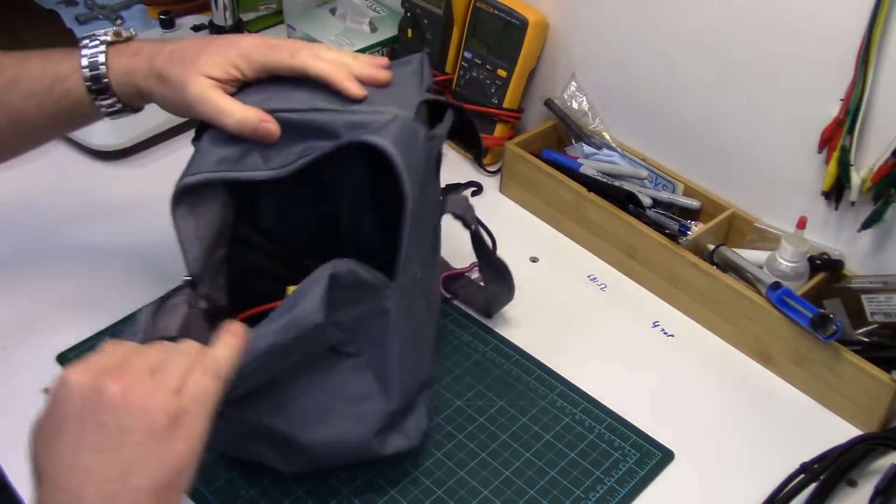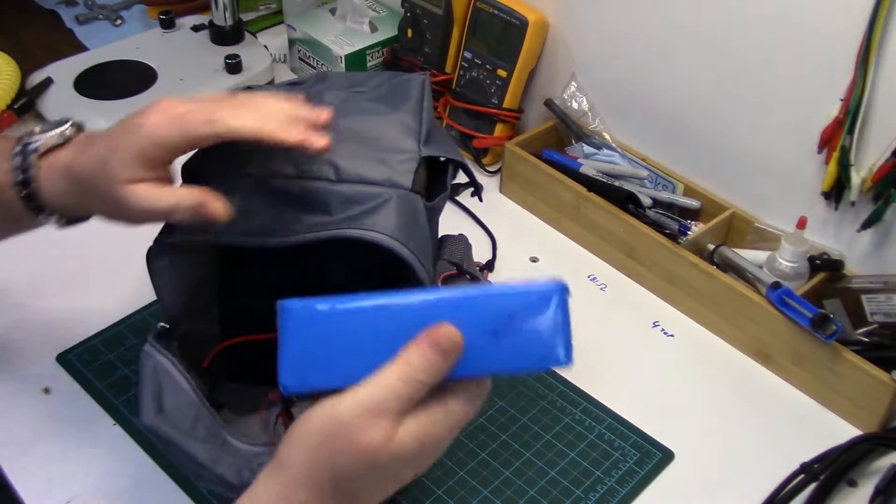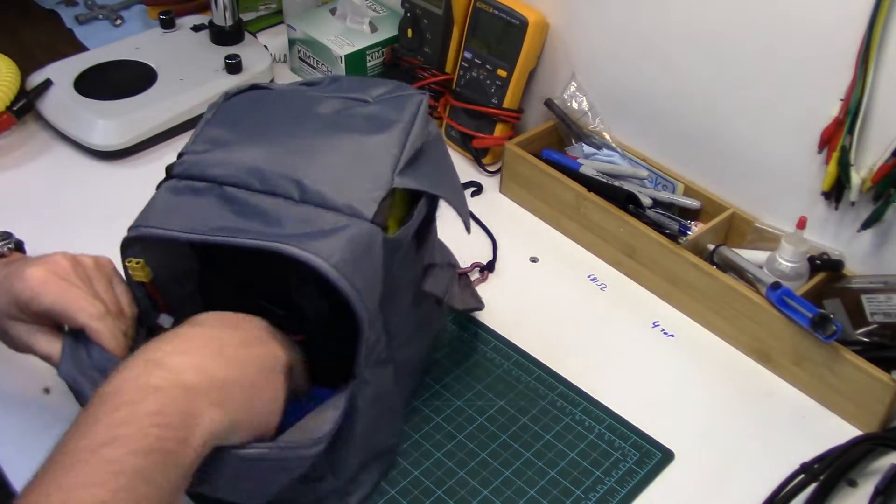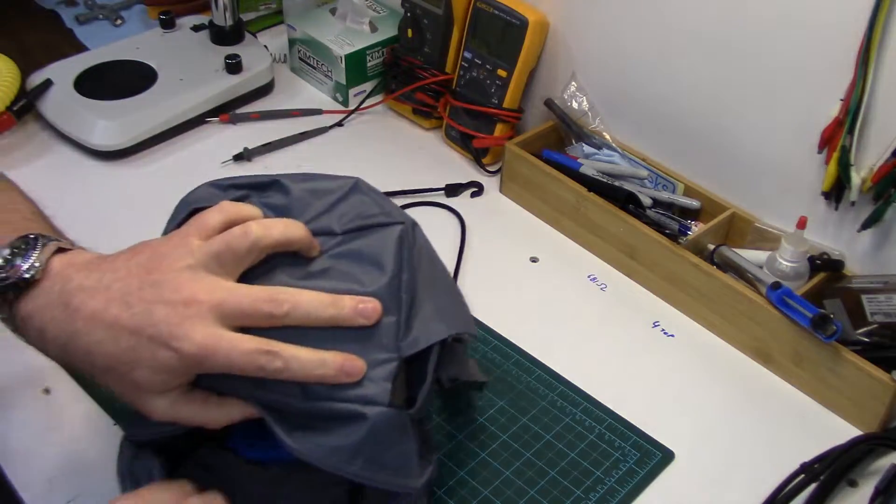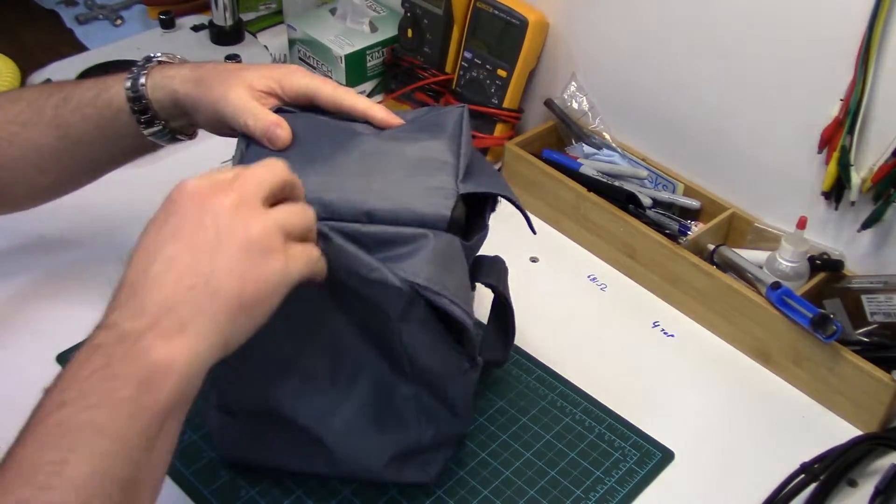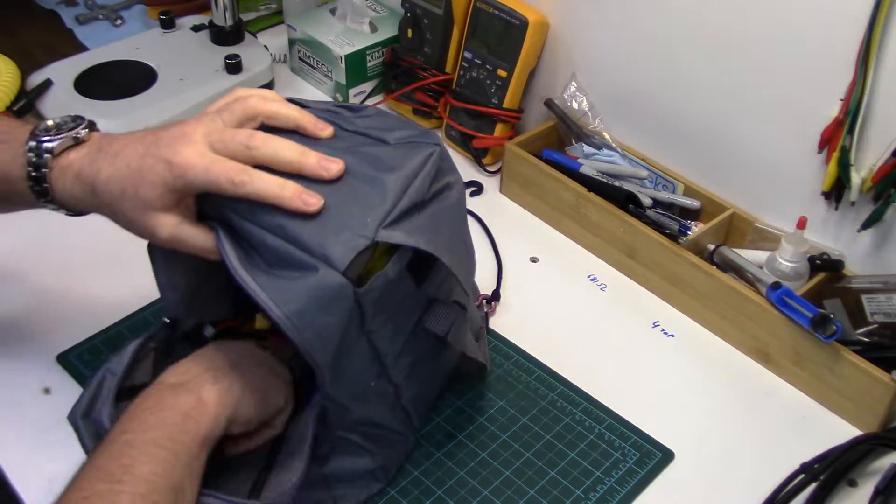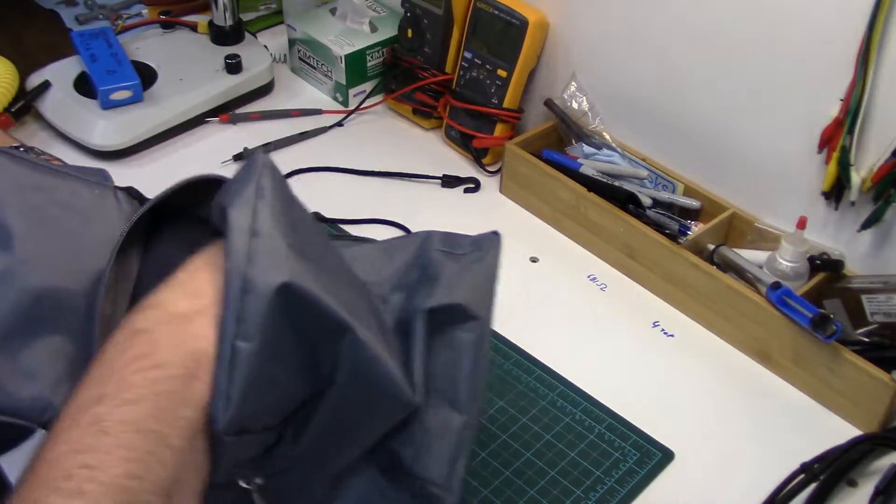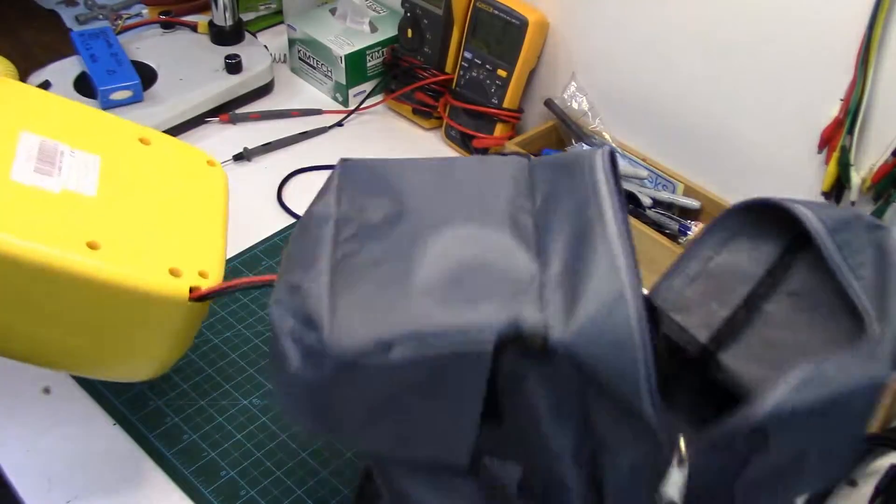I'm just going to show you the package real quick. So this is a 3S 6000 mAh pack, that's probably what I'm going to use with it. And as you can see, it fits into that little pouch in the back of the bag here, no problem. And then there's a little hole in the back that the cord comes through.